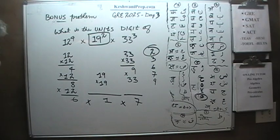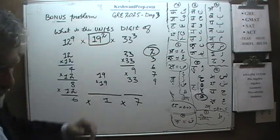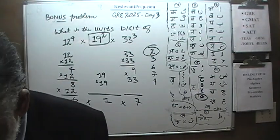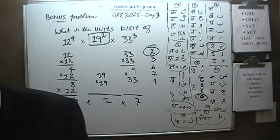It ends in 2 because 6 times 7 is 42. The product of this quantity, whatever it is, we're not interested in that, but whatever it is, will end in 2. The answer is A.